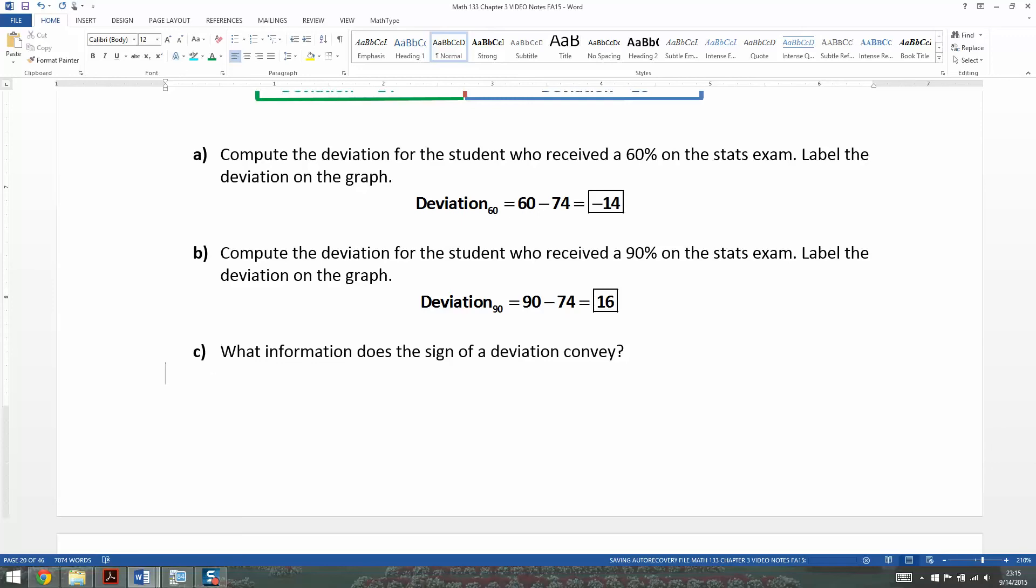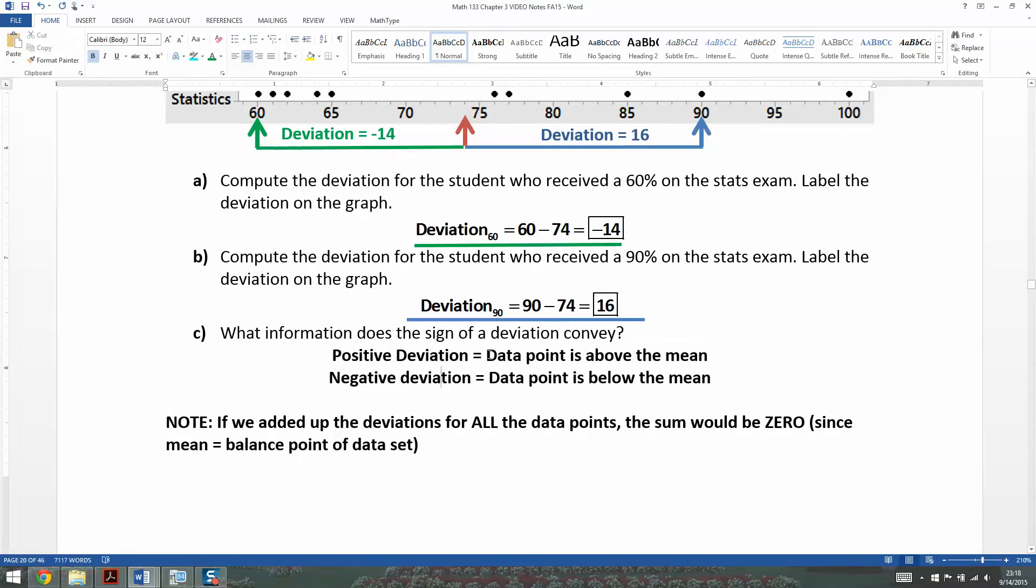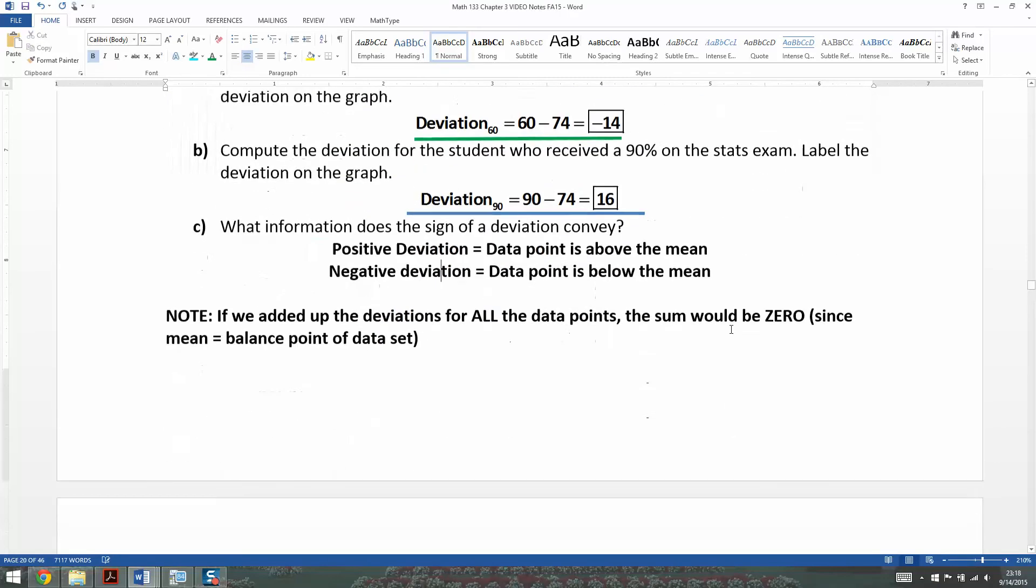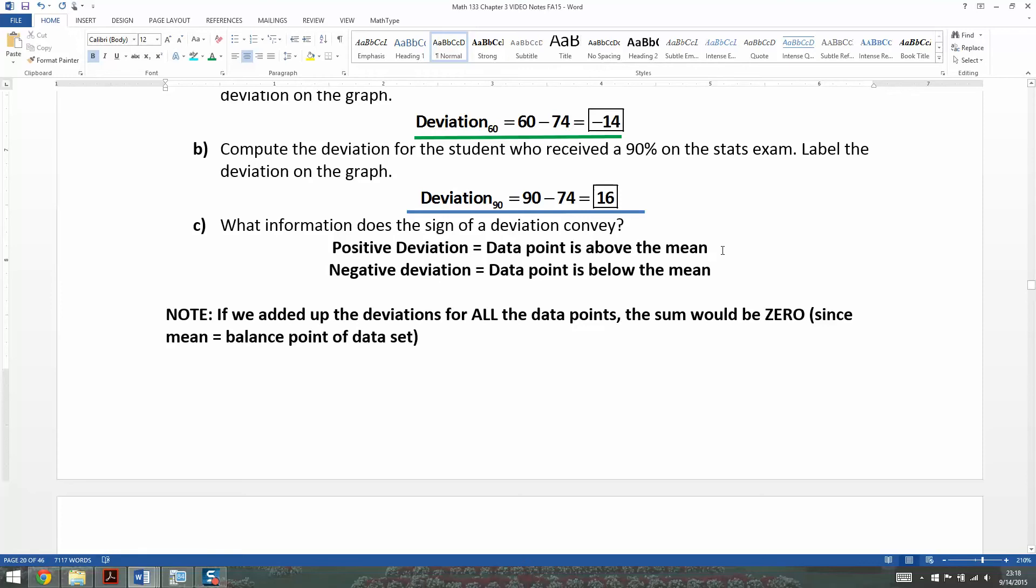So let me type that up. There we have it. So positive deviation means the data point is above the mean, to the right on the number line, and then negative deviation means that it's below the mean, which would be to the left on the number line. We don't have to write right and left, but that's what it means. So positive means above, and negative means below, right?